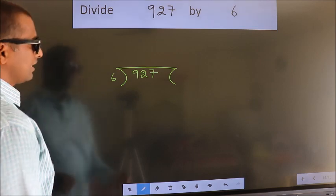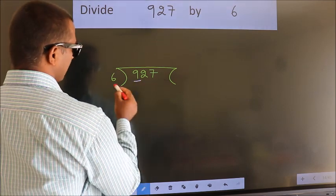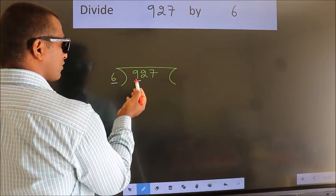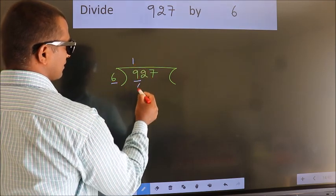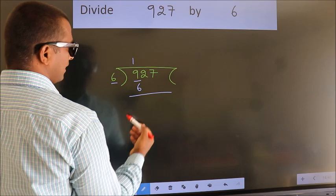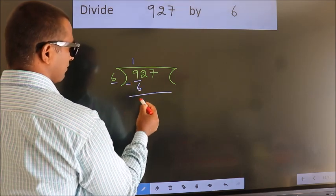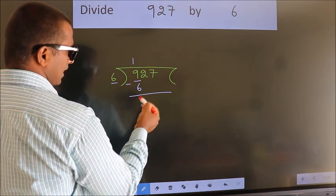Next, here we have 9. Here 6. A number close to 9 in the 6 table is 6 once 6. Now we should subtract. We get 3.